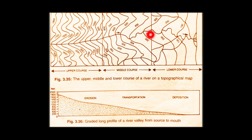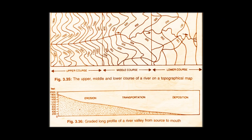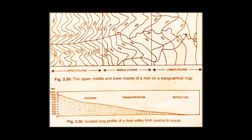The meanders form as the river curves in the middle course, where the elevation drops to around 800–700 meters, much lower than the upper course. In the lower course the river enters a very gentle sloping area, forming a delta. You can see in the map the height is only 100–200 meters above sea level, indicating a very gentle slope and low altitude.